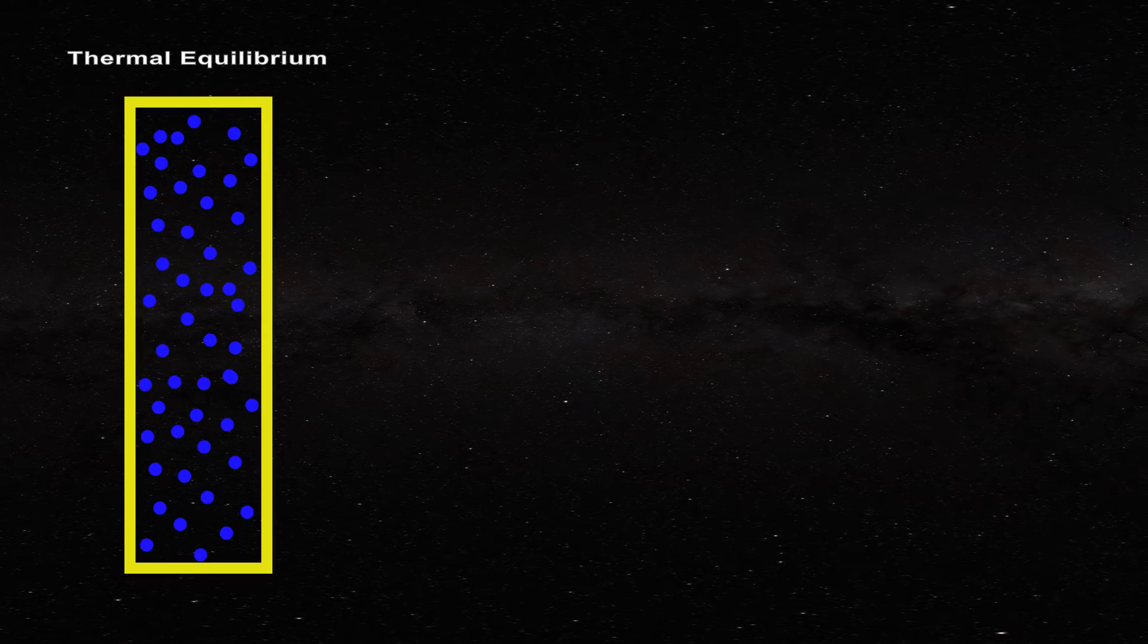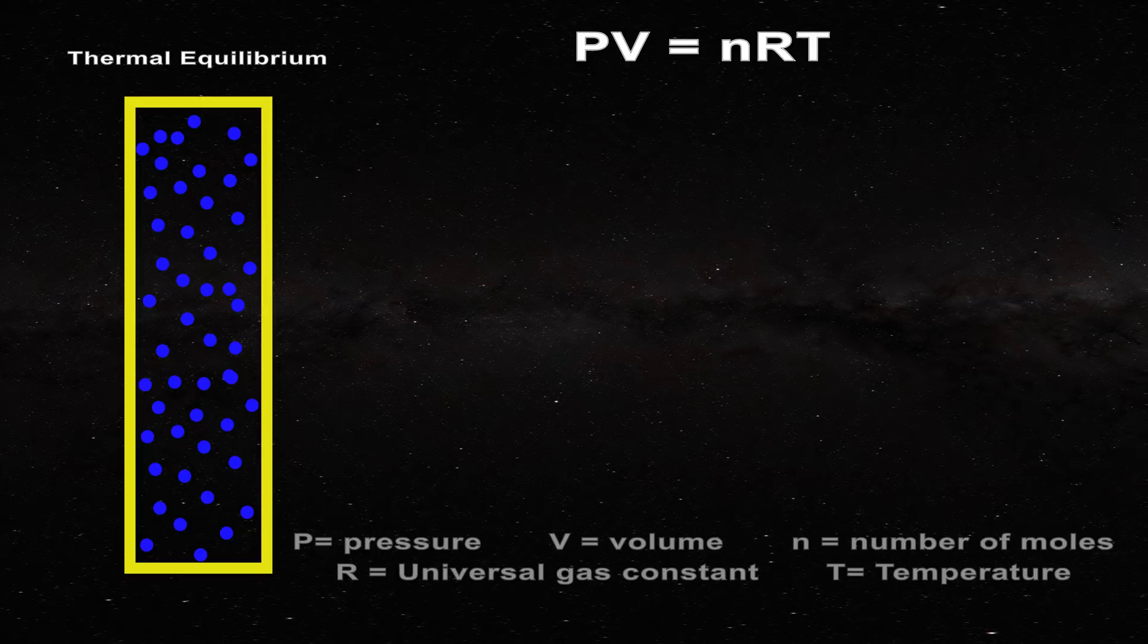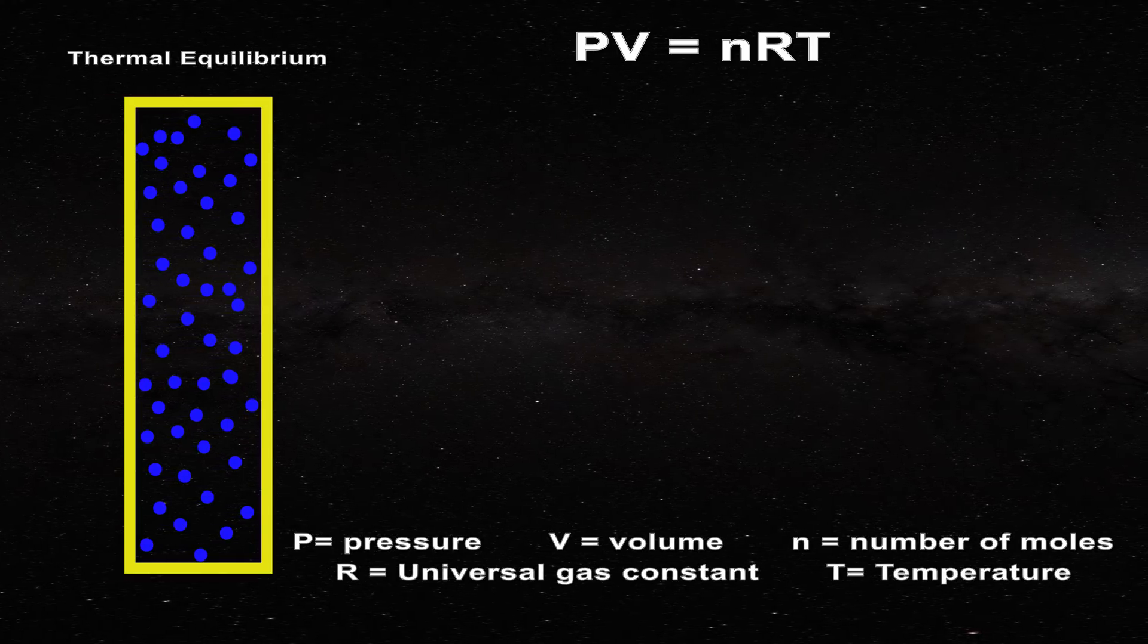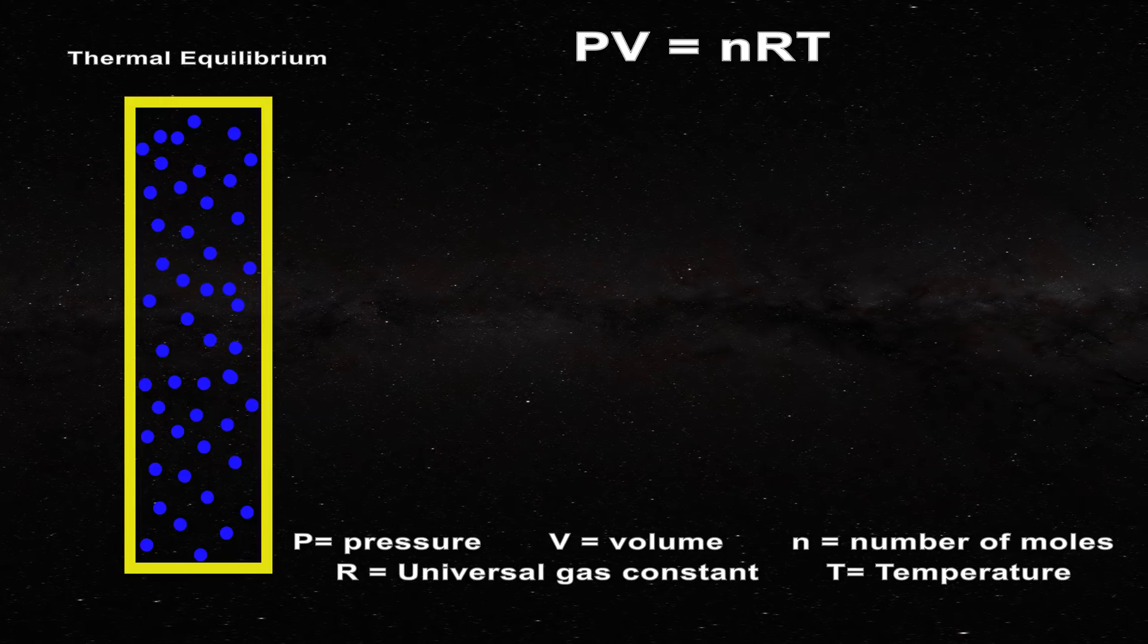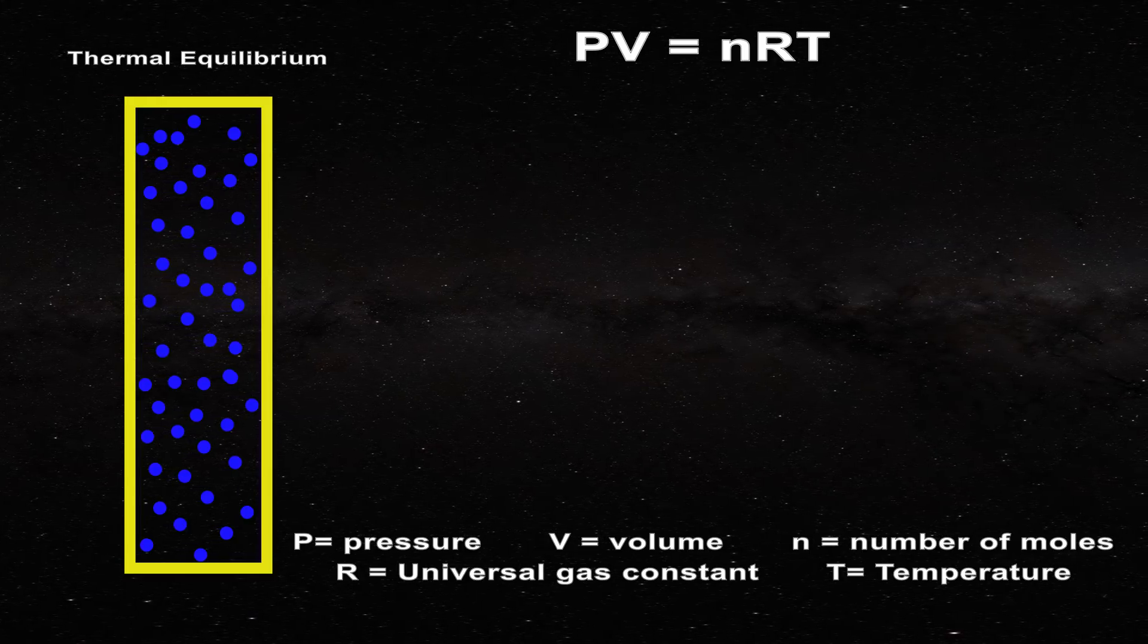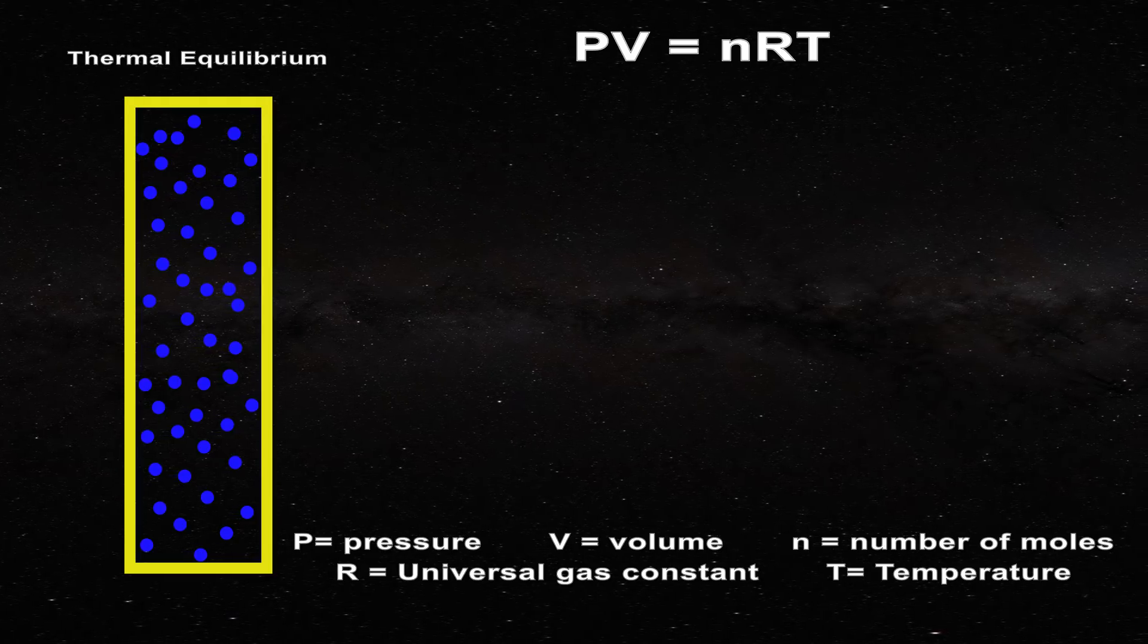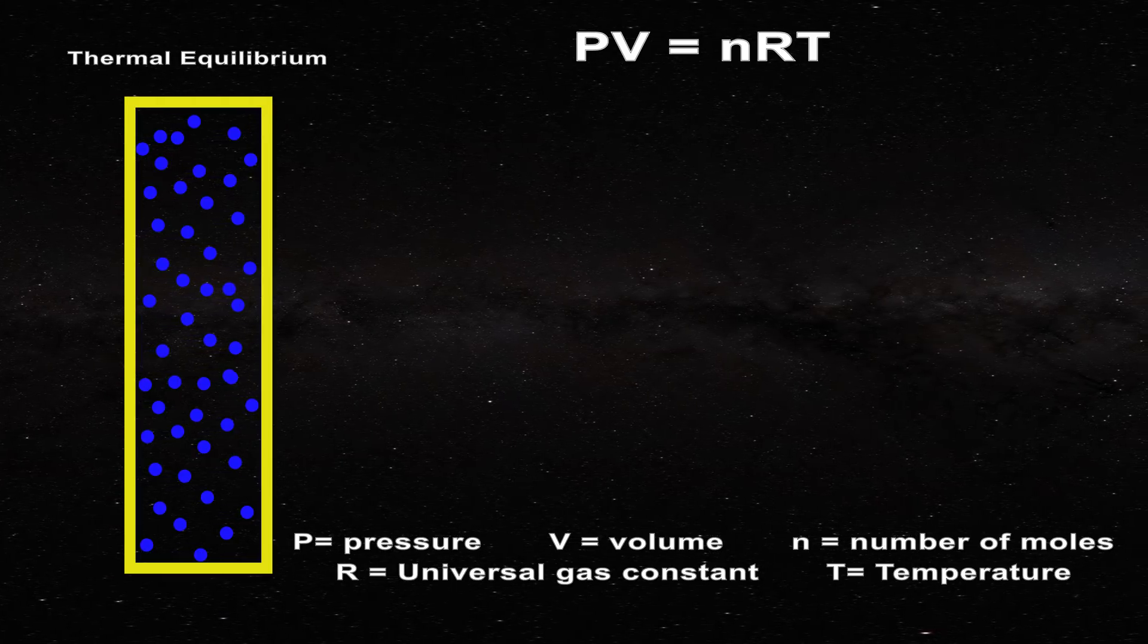We can describe this system by the ideal gas law where p is the pressure, v the volume, n the number of moles, R the gas constant and T the temperature. In this expression, p and T are uniform intensive properties, while v volume and n the number of moles are extensive properties.